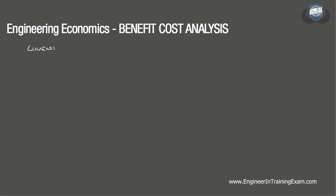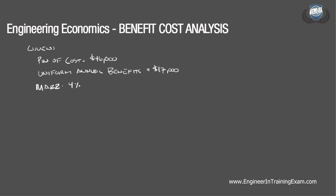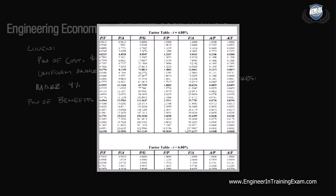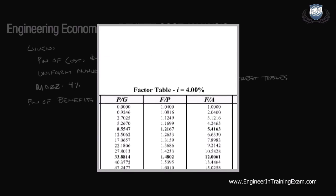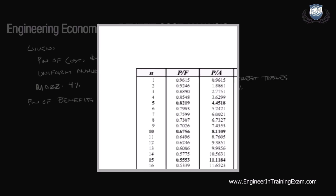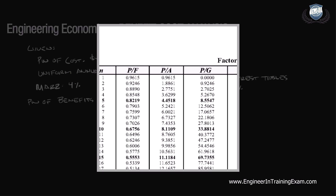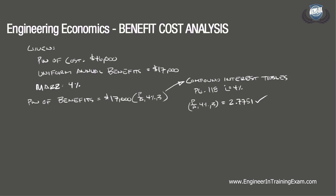In this problem, we are given a present worth of cost of $46,000 and a uniform annual benefits of $17,000, and our MAR is 4%. Our present worth of benefits is equal to $17,000 times P over A, 4%, 3 — converting the annual benefits into a present worth of benefits. Referencing the compound interest table for 4% on page 118 of the NCEES Supplied Reference Handbook, we reference N equals 3 and find that P over A, 4%, 3 is equal to 2.7751. So our present worth of benefits is 17,000 times 2.7751, which equals $47,178.